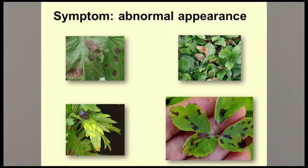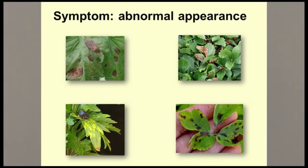Angular leaf spots are often associated with downy mildews, bacterial diseases, or foliar nematodes. Some other common symptoms include cankers or sunken areas on the trunk or branches of trees, and of course wilting.